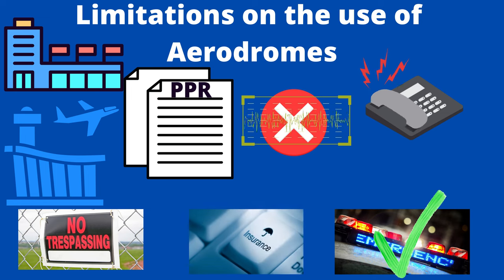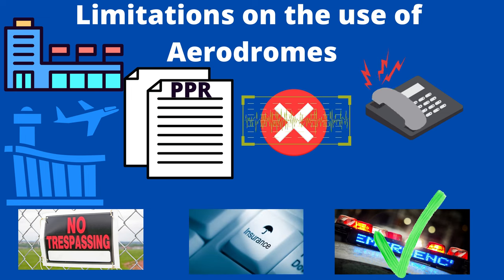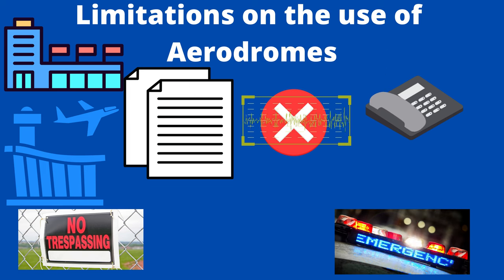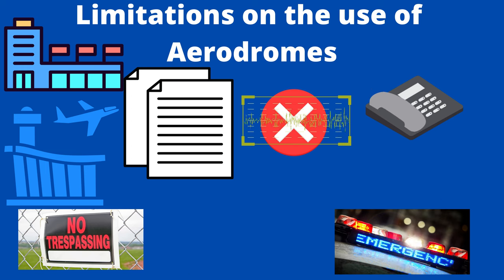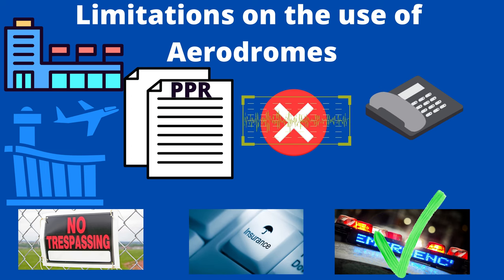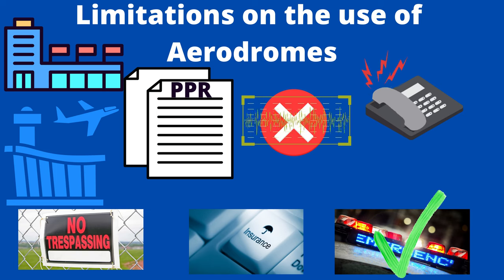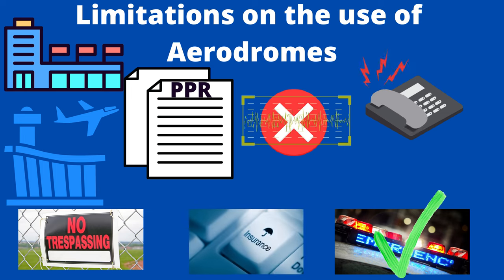Remember that if you simply turn up and land without seeking permission, you are trespassing on private property. Further, there may be safety implications as a particular airstrip may be used only in a certain direction or in certain wind conditions. It may be prone to waterlogging, or there could be specific noise abatement procedures to be followed. Failure to seek permission and the requisite information could lead to an accident and subsequent refusal by the insurance company to pay for the claim, because you have breached the Air Navigation Order. Permission to use a military aerodrome must always be obtained before taking off for the aerodrome concerned.